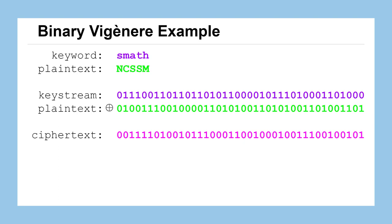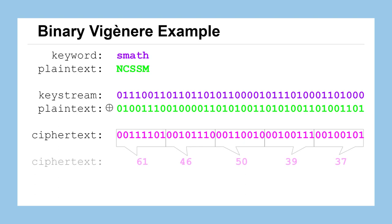Taking those bits in groups of 8 — one byte — we convert them to their decimal representation. All of these numbers have a viewable ASCII character: they become the equal sign, the period, the 2, the single quote, and the percent symbol. So we've encrypted our message.